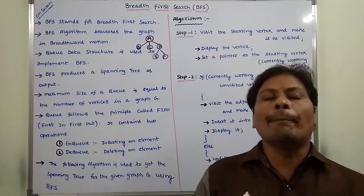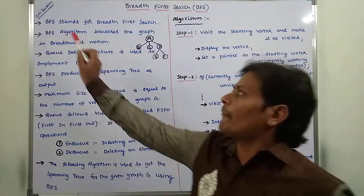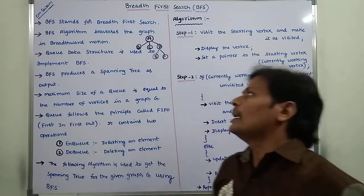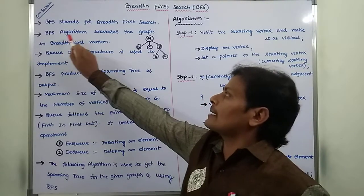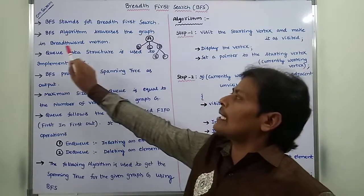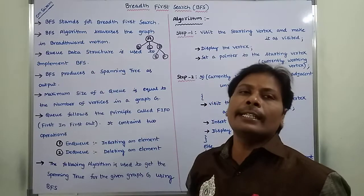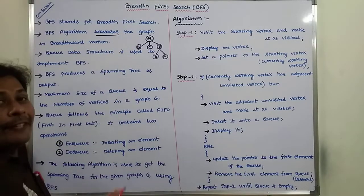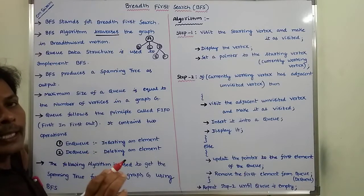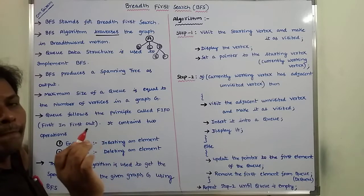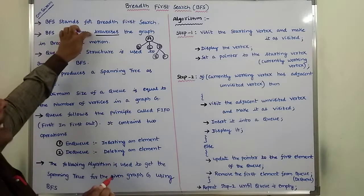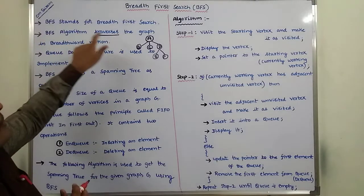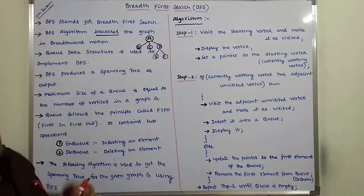Now we go for BFS. BFS stands for Breadth First Search. The BFS algorithm traverses the graph in breadth-first motion, meaning it visits all the vertices of a graph exactly once in that manner.